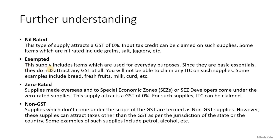Exempted supplies include items which are used for everyday purposes. Items of public interest are generally exempted by the government. Since they are basic essentials, they do not attract GST at all. You will not be able to claim any ITC on such supplies because they are directly consumer goods, consumed by consumers themselves. Some examples are bread, fresh fruits, milk, curd, rice, wheat and edible oil etc.